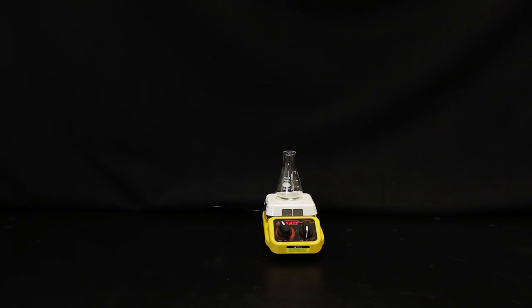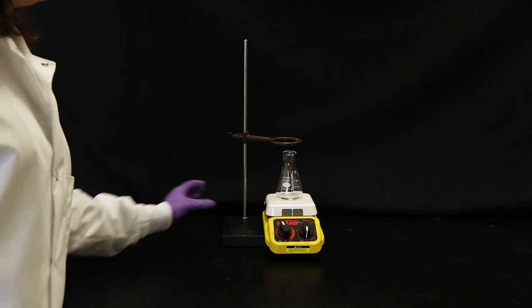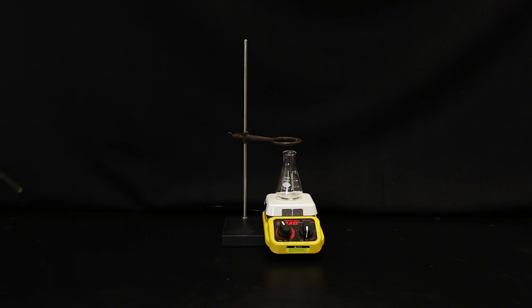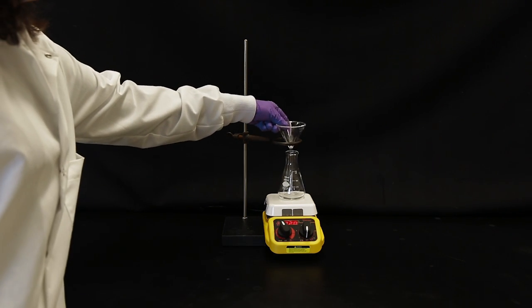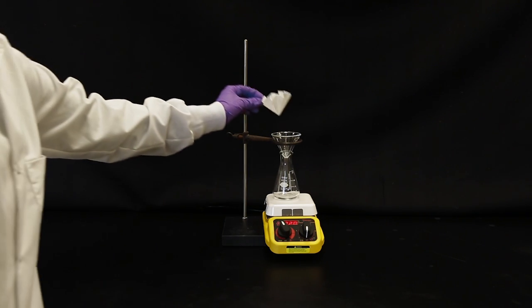To filter, place an Erlenmeyer flask that contains a small amount of the recrystallization solvent – in this instance, water – onto a hot plate. Place the glass funnel with pleated filter paper on top of the ring clamp and into the Erlenmeyer flask.